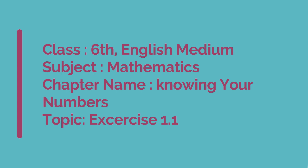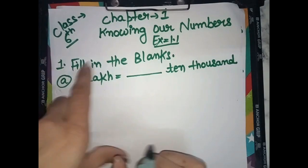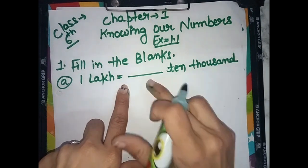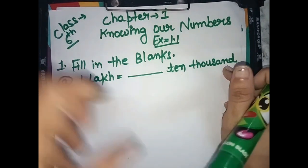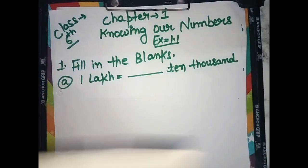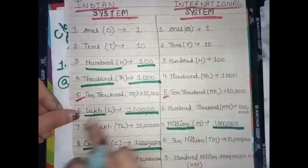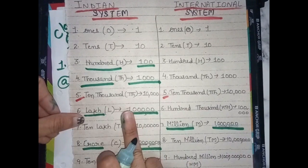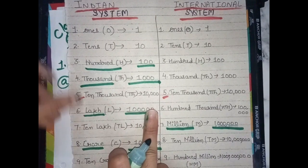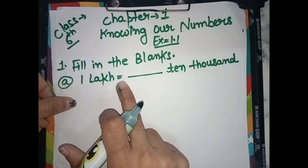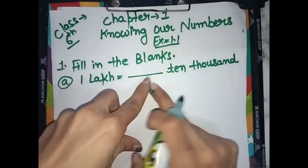Students, Class 6, Chapter 1 — Knowing Our Numbers, Exercise 1.1. First, fill in the blanks. 1,00,000 is equal to how many ten-thousands? In the Indian and International system, 1,00,000 has five zeros.